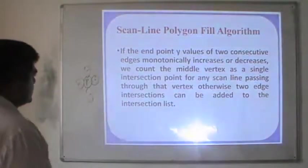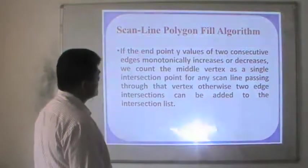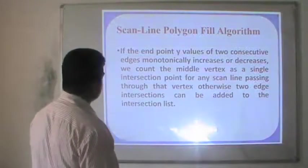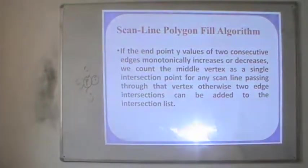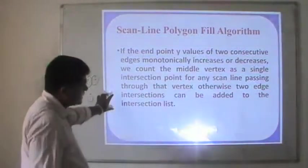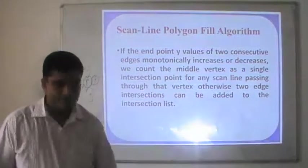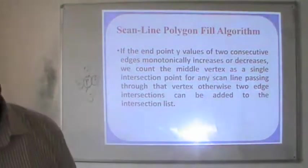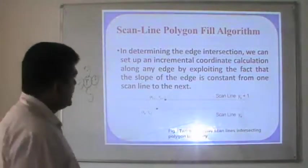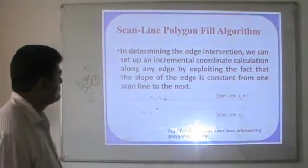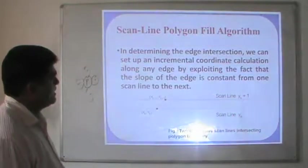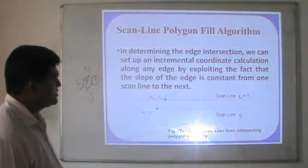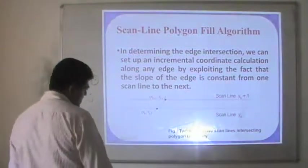If the endpoint y values of two consecutive edges monotonically increase or decrease, we count the middle vertex as a single intersection point for any scanline passing through that vertex. Otherwise, the two edge intersections can be added to the intersection list. In determining the edge intersection, we can set up an incremental coordinate calculation along any edge by exploiting the fact that the slope of the edge is constant from one scanline to the next.